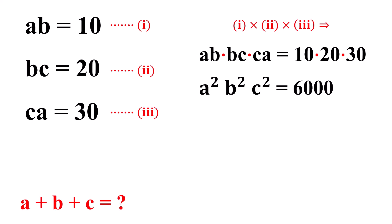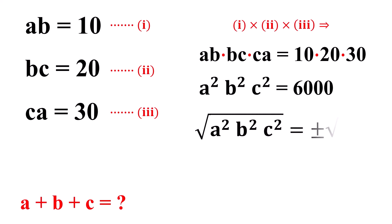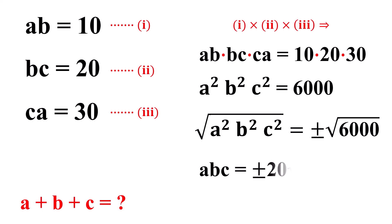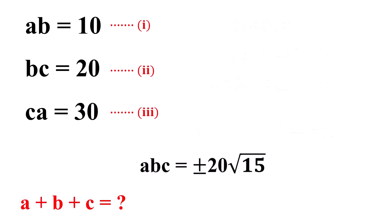Now, taking the square root of both sides, we get the square root of A squared B squared C squared equals plus or minus the square root of 6,000. Or, ABC equals plus or minus 20 times the square root of 15.